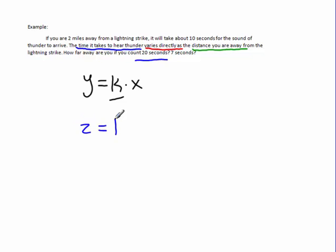So, it's 2 equals k, well, x we know is 10, so k times 10. And dividing both sides by 10, we can solve for k. So, now we have 1 fifth equals k. And this will help out.